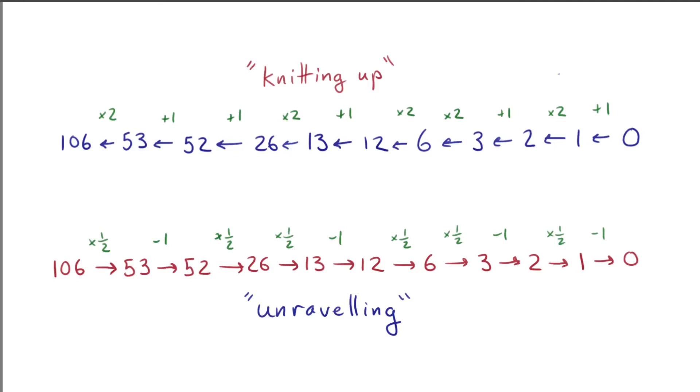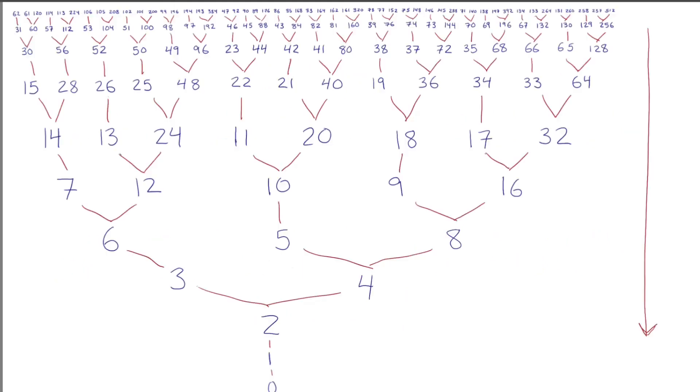So did we just get lucky, or can you always unravel a number like this? It turns out this process is quite a bit better behaved than something like Collatz. Here are some example paths. They always take you to zero. Can you see why?